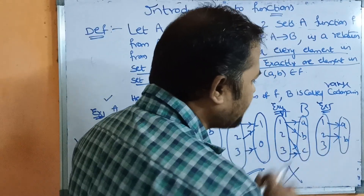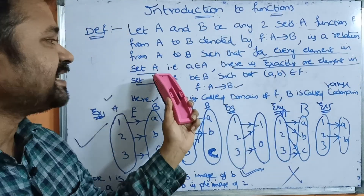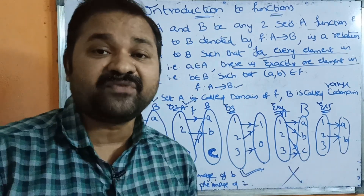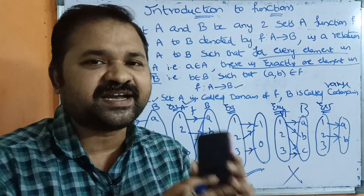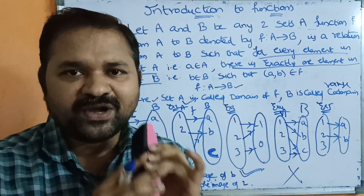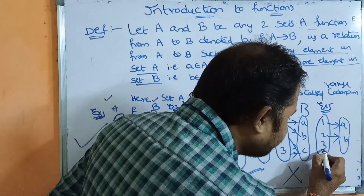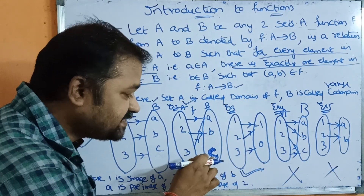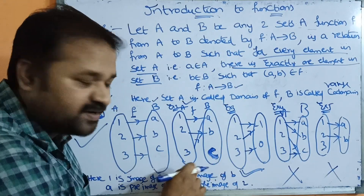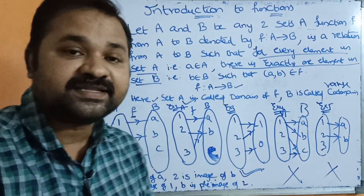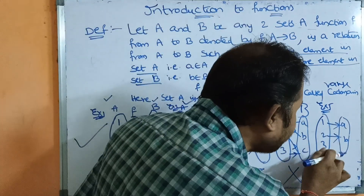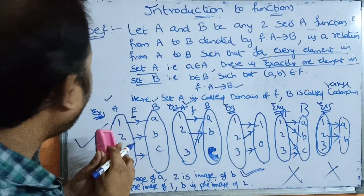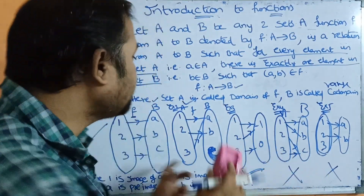In Example 5, set A has three elements and set B has two elements. Elements 1 and 2 each map to an element in set B, but element 3 has no mapping at all. Since every element of set A must have a mapping in set B for it to be a function, and element 3 is missing a mapping, this is NOT a function. In summary: if an element in set B is unmapped, that is acceptable; but if an element in set A has no mapping, it is not a function.